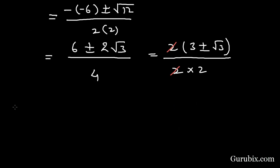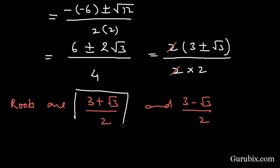Therefore, the roots are (3 + √3)/2 and (3 - √3)/2. This is the solution of the question. Thank you.